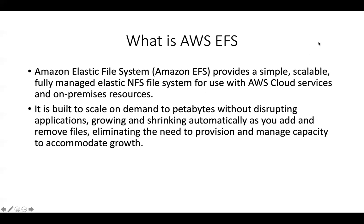Elastic File System provides a simple, scalable, fully managed elastic network file storage — an NFS file system — for use with AWS cloud services and also on-premise resources. For on-premise connectivity, you should have at least a VPN connection or a Direct Connect connection, since EFS resides within the AWS cloud VPC and your on-premise infrastructure is in a separate network. EFS is built to scale on demand to petabytes without disrupting applications, growing and shrinking automatically as you add or remove files.